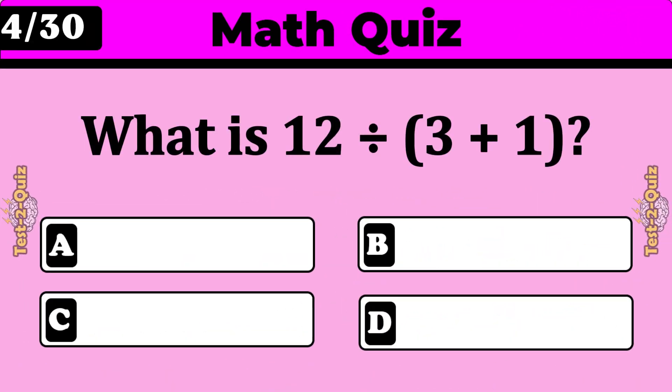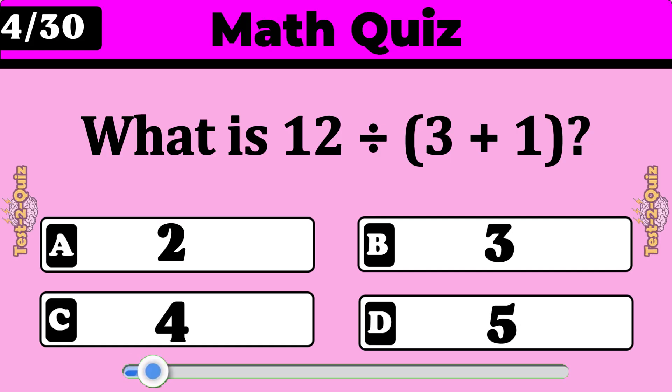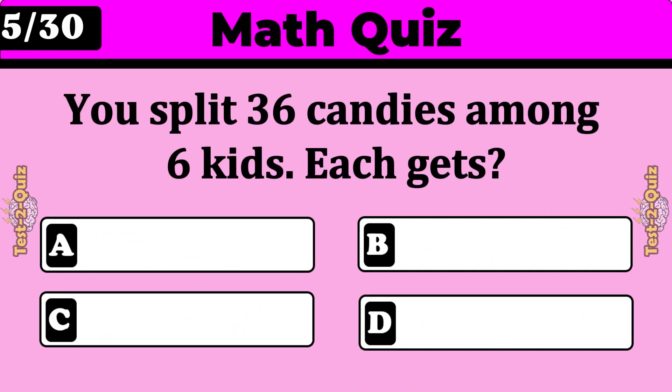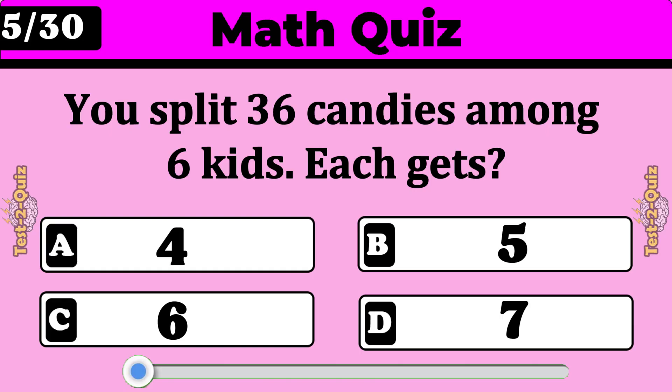What is 12 divided by 3 plus 1? 5. Split 36 candies among 6 kids. Each gets? 6.